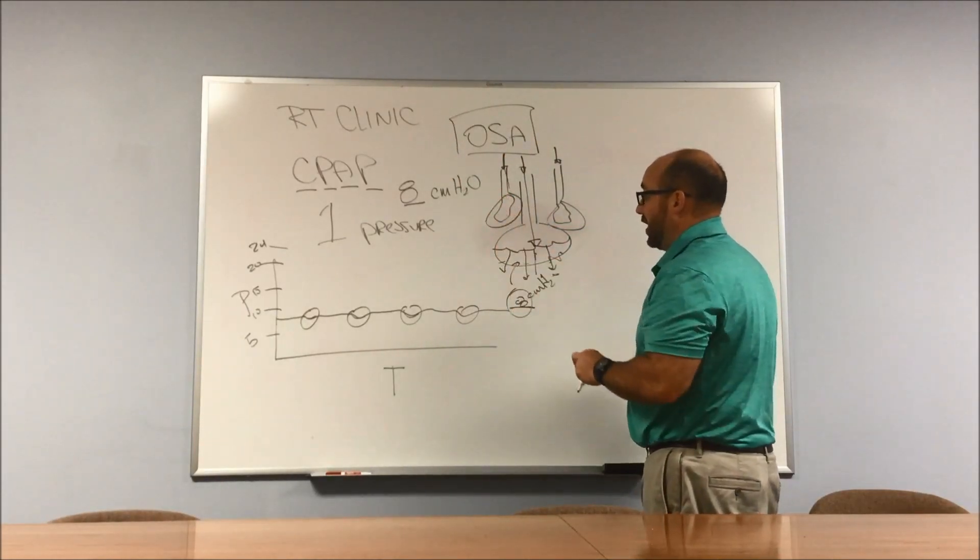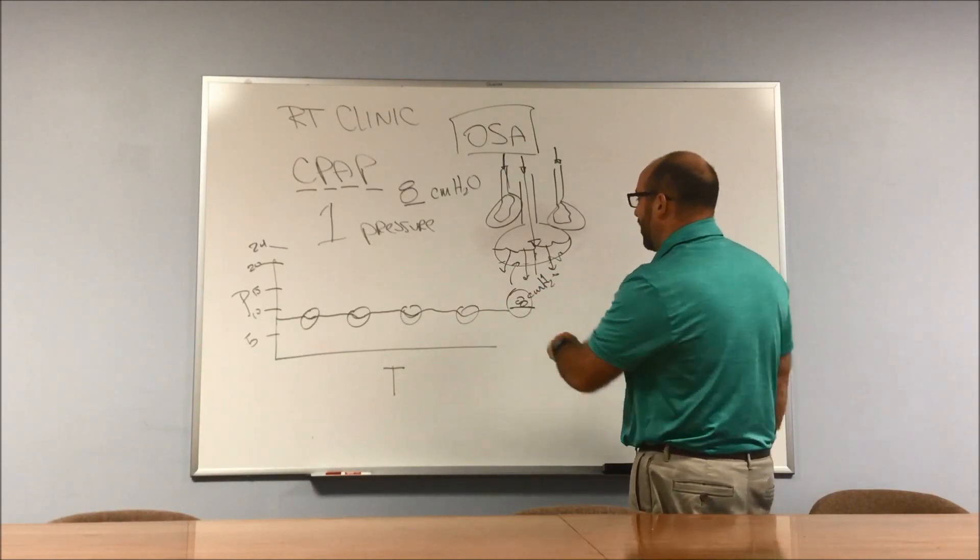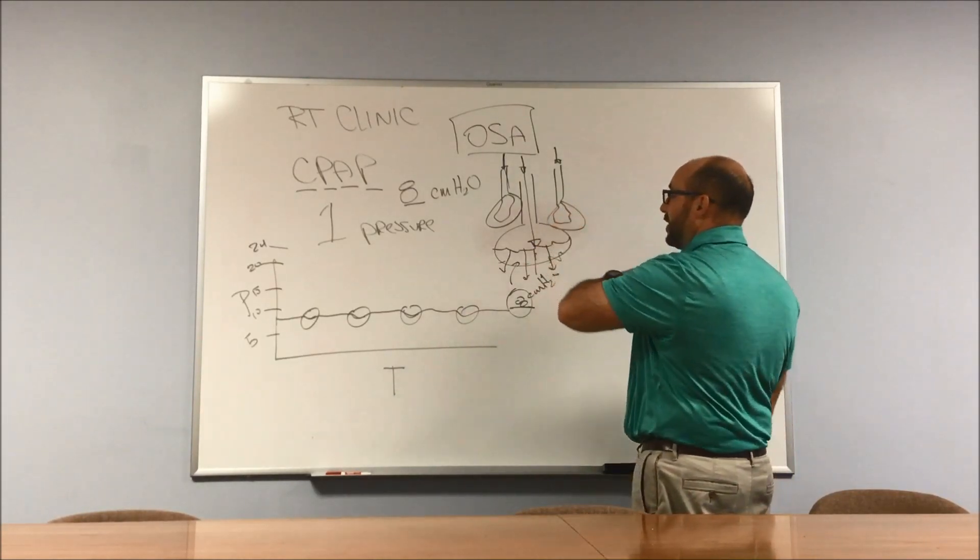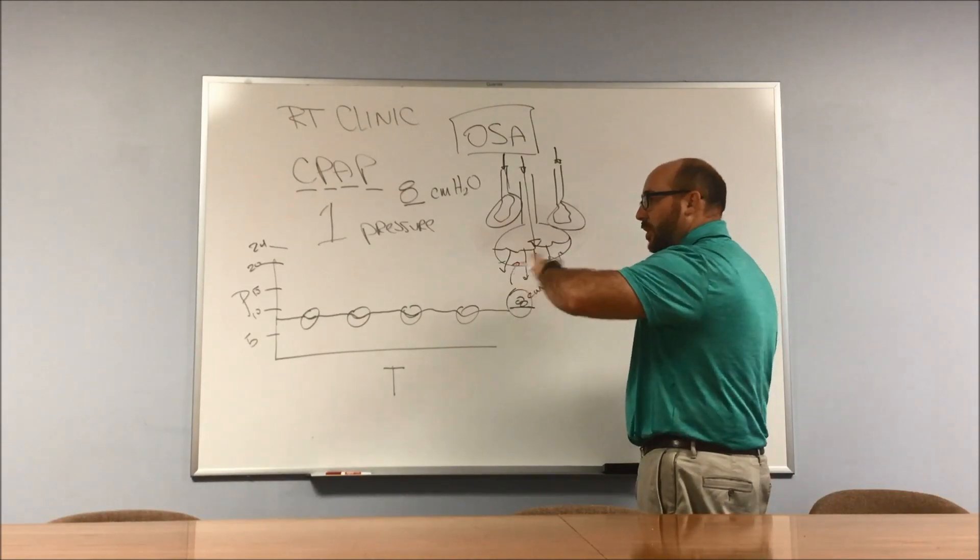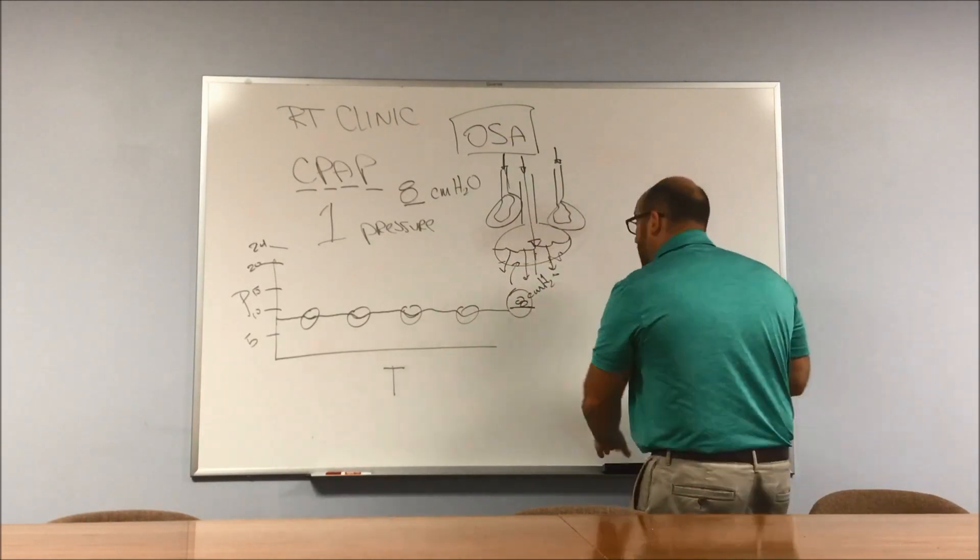That's CPAP kind of in a nutshell. Oxygenation, splinting the airway - that's what it can be used for, maybe in the CHF exacerbation without a ventilatory component working well, or opening alveoli for just straight oxygenation.